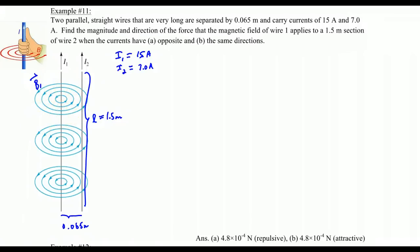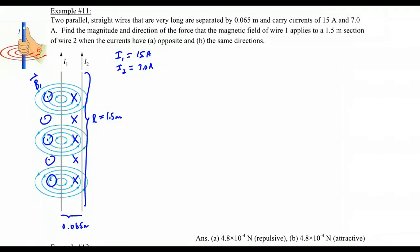The magnetic field lines are entering the page on this side — I'll draw X's here — and they would be coming out of the page on the other side. So the magnetic field lines go into the page on the right side of the wire and out of the page on the left side of the wire. As you get further away the magnetic field will get weaker.